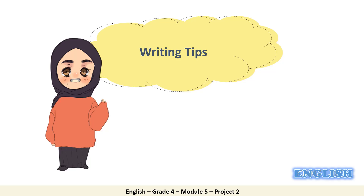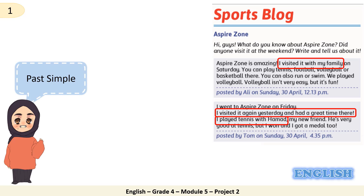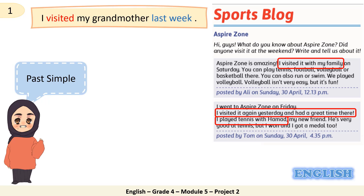It's time to go over some writing tips to help you while writing a blog. Now let's go over the text and read the sentences with me. 'I visited it again yesterday and had a great time there. I played tennis with Hamad.' What is the tense of these sentences? It is the past simple. We use the past simple to talk about actions that happened in the past and finished. Now read the examples with me. 'I visited my grandmother last week.' Visited is the verb — it's in the past. Last week is the time expression, the key word that shows the past.